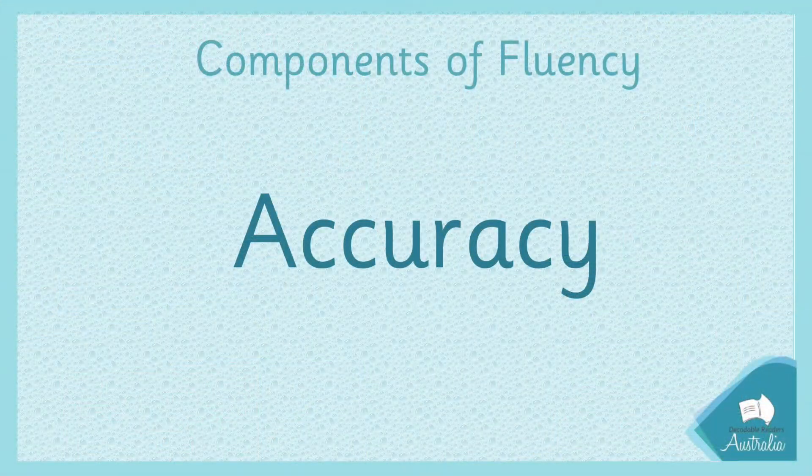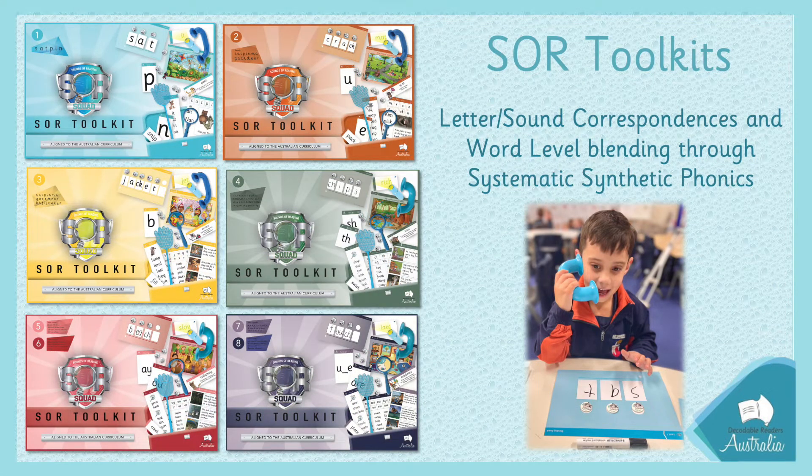Fluency actually has four components. The first one is all about reading accuracy. Before we can even develop any level of fluency, we need to have a level of automaticity at word reading. How do we achieve that? It's through explicit instruction of letter-sound correspondences as well as word blending. The activities that promote that automaticity can all be found in our SOR toolkits — our Science of Reading toolkits — through a systematic synthetic phonics approach.